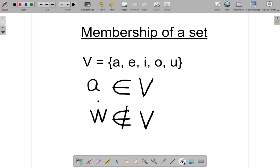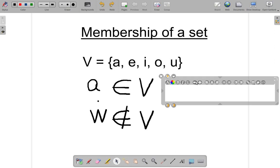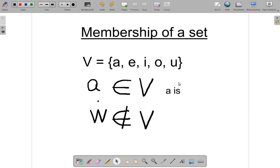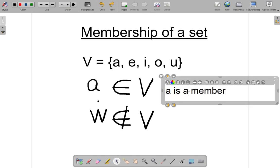So again, what this is saying is that A, let me reduce my size here, A is a member of set V.